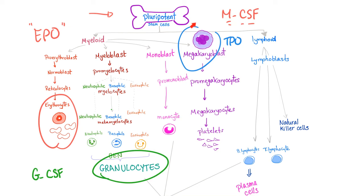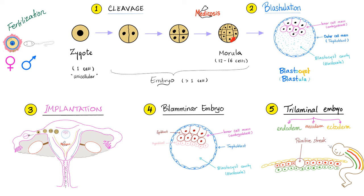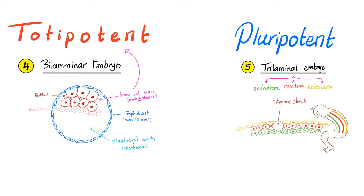Fertilization produces a zygote, then a morula, then a blastocyst. Implantation of the blastocyst leads to the bilaminar embryo — epiblast and hypoblast. Then gastrulation gives endoderm, mesoderm, and ectoderm. The inner cell mass or embryoblast is what gives you the entire embryo; therefore, embryoblast cells are totipotent stem cells — they can literally give you anything: epithelium, connective tissue, nervous tissue, muscle tissue.